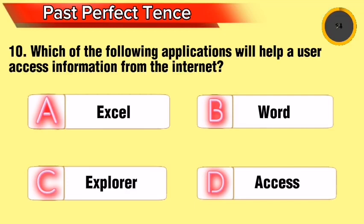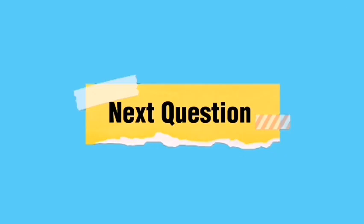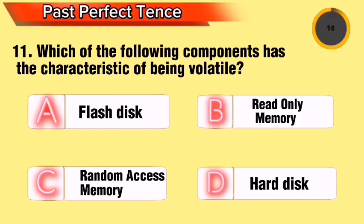Question 6: Which of the following applications will help a user access information from the internet? Which of the following components has the characteristic of being volatile?